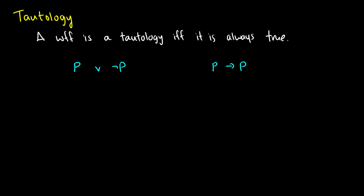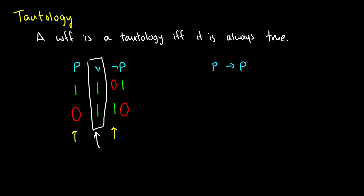For example, if we have p ∨ ¬p, we can set up this truth table. We give p the values one and zero — there's only one atomic proposition so we just need two rows. The negation of p flips the truth values, so instead of one, zero we get zero, one. Now we do p ∨ ¬p: if at least one of those is true, we get true for the entire WFF. Both of these are true, so in our final column for p ∨ ¬p, this is always true. Therefore, this well-formed formula is a tautology — no matter what situation we're in, this is always going to be true.